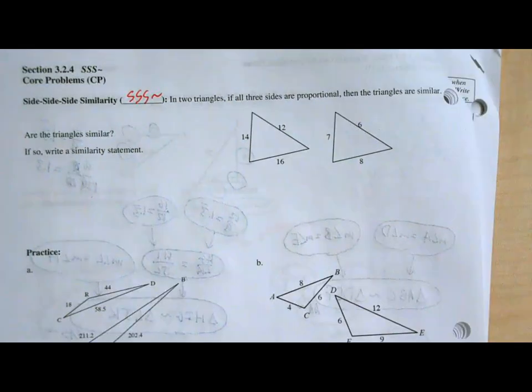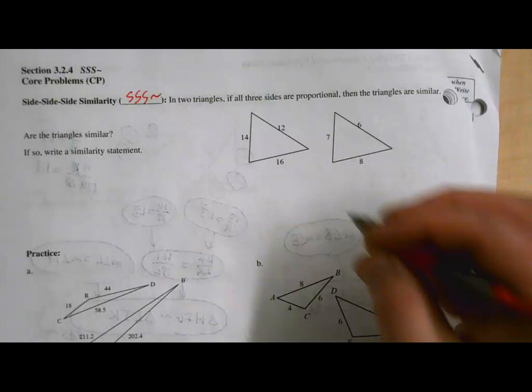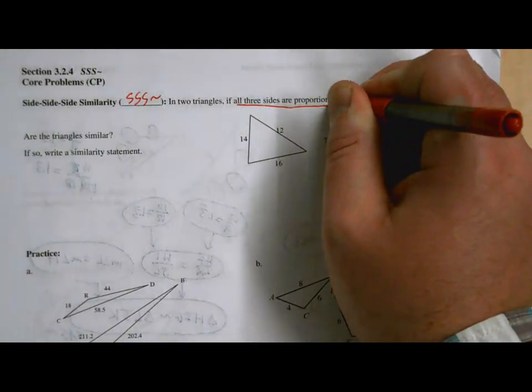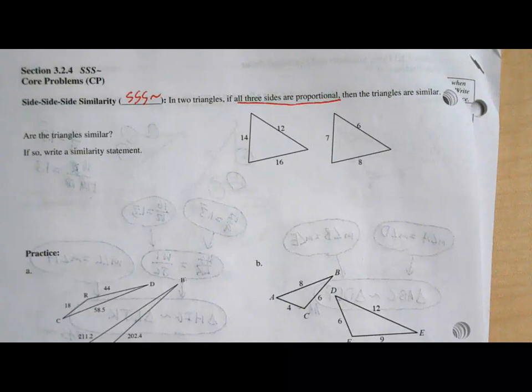So this is only going to work if you have all three sides proportional. What does proportional mean? It means if I start doing ratios, those ratios have to be equal.